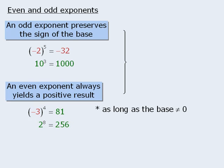Let's see how these properties affect equations. Since the exponent of 3 is odd, we know the sign of the base is preserved. Since 8 is positive, x must be positive, so this equation has one solution: x equals 2. In the next equation, the exponent of 2 is even, so the expression is always positive regardless of the sign of the base. Therefore there are two possible solutions: x can equal 2 or x can equal negative 2.